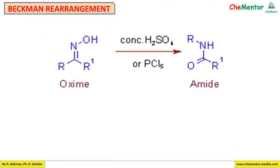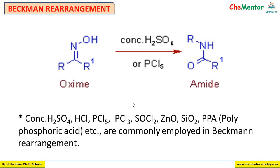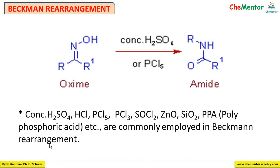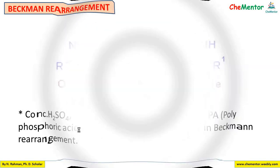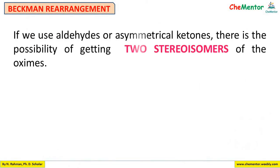Beckmann rearrangement is named after the German chemist Ernst Beckmann. In this rearrangement, an oxime gets converted to an amide in the presence of concentrated sulfuric acid, HCl, PCl₅, or any one of the related reagents.